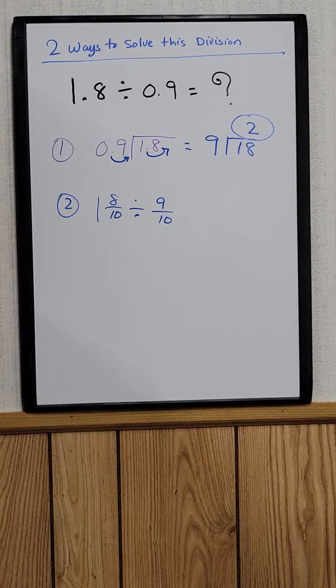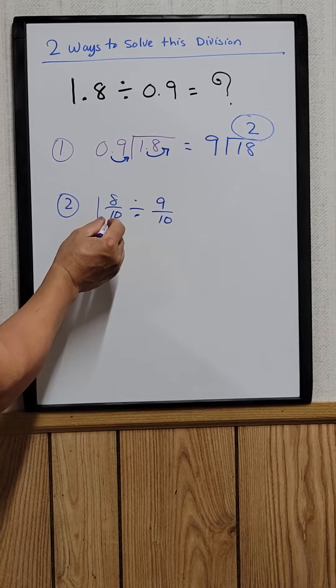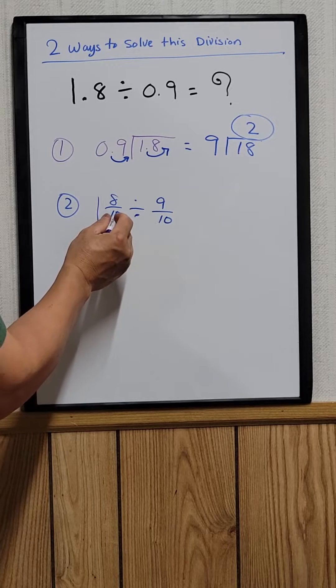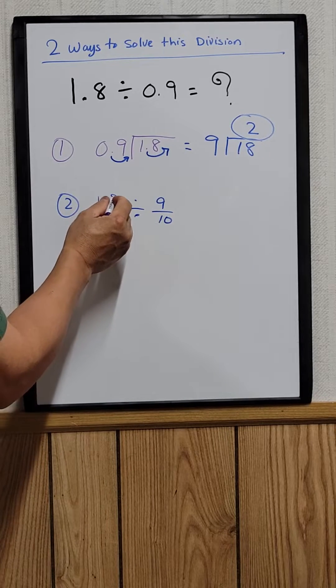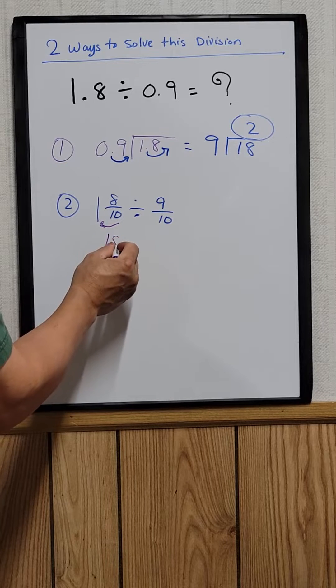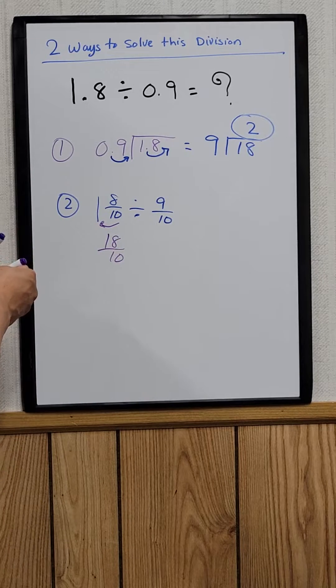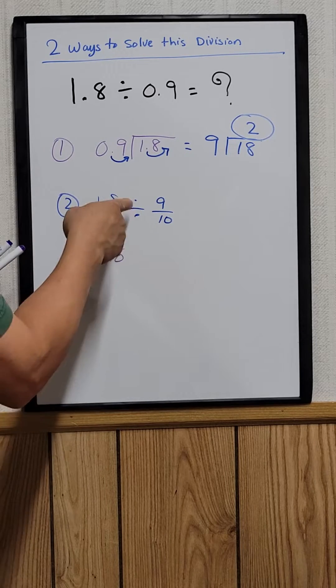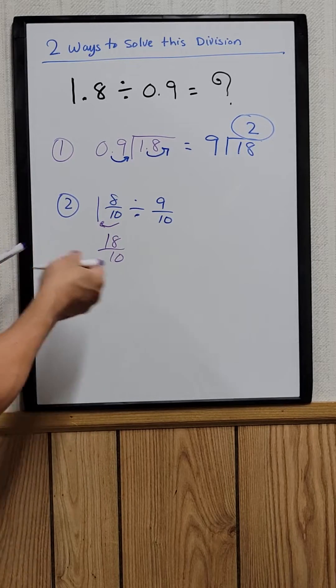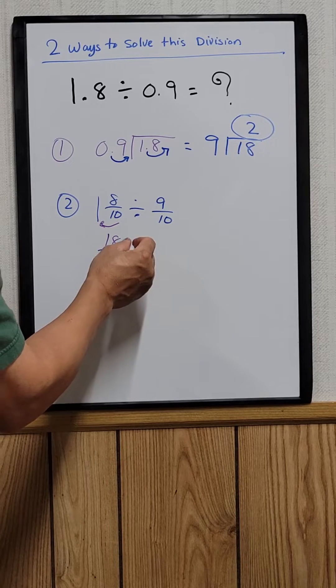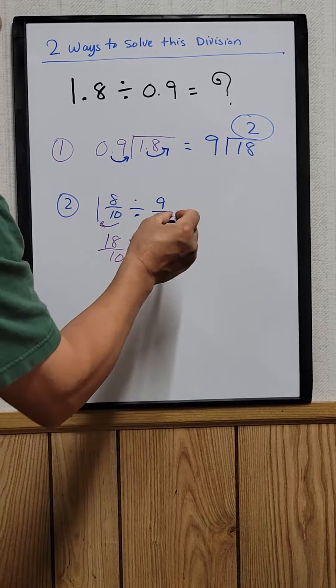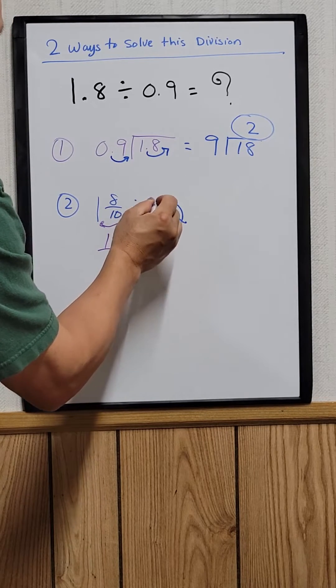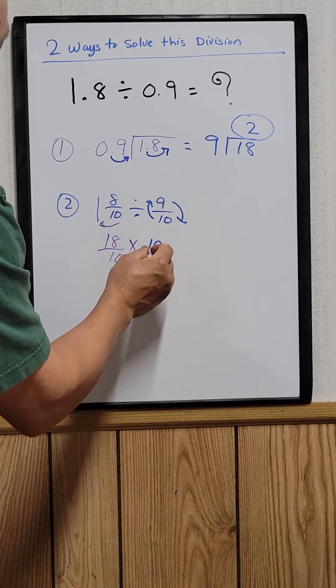And then all you need to do is convert this to a mixed fraction. 10 times 1 plus 8 would be 18 over 10. And then just change the division sign to multiplication. But to do that, you have to flip this number right here. It will be 10 over 9.